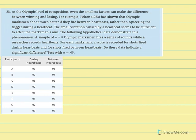A sample of eight Olympic marksmen fires a series of rounds while a researcher records heartbeats. For each marksman, a score is recorded for shots fired during heartbeats and for shots fired between heartbeats. Do these data indicate a significant difference? Test with alpha set at 0.05.